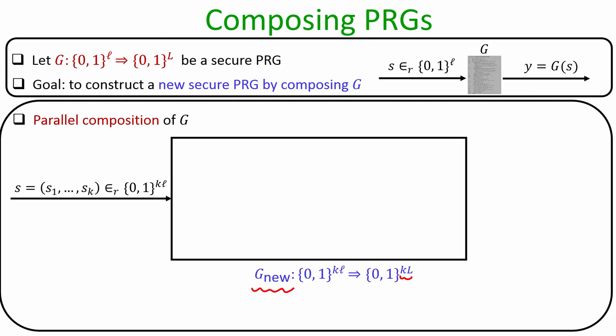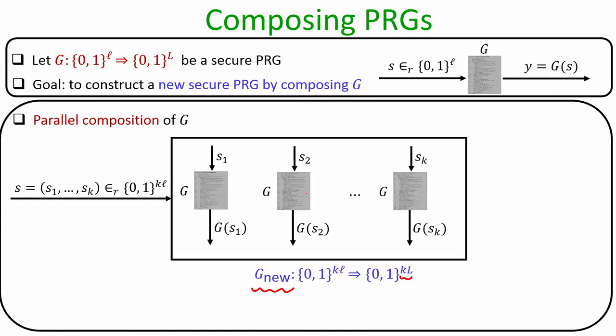G_new takes k blocks of inputs where each block is of size little l bits and each block is uniformly random. Internally, G_new runs algorithm G on the first block independently, then another copy of G on the second block, and so on up to the k-th copy on the last block. It simply concatenates the outcomes of each independent invocation of G - that is the parallel composition of G.